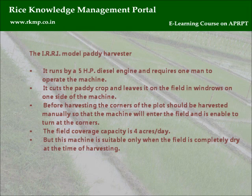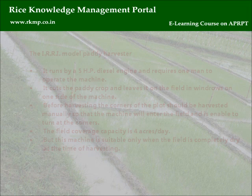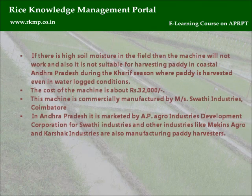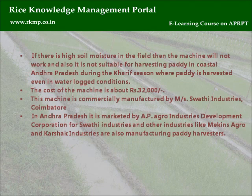The field coverage capacity is 4 acres per day. However, this machine is suitable only when the field is completely dry at the time of harvesting. If there is high soil moisture, the machine will not work, and it is not suitable for harvesting paddy in coastal Andhra Pradesh during the Kharif season where paddy is harvested even in waterlogged conditions. The cost of the machine is about Rs. 32,000. It is commercially manufactured by Swati Industries, Coimbatore, and marketed in Andhra Pradesh by AP Agro Industries Development Corporation. Other manufacturers include Mekin's Agro and Karshak Industries.